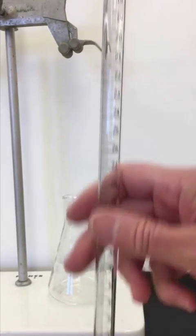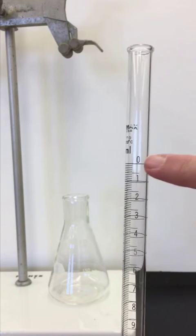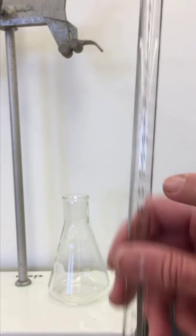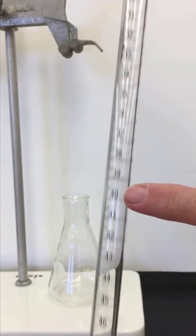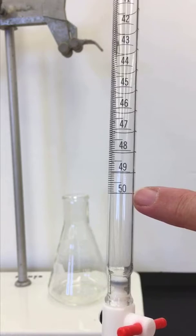On the burette itself, if we go all the way to the top of the burette, the burette is labeled at zero milliliters on the top. It goes all the way down to this burette's capacity of 50 milliliters.